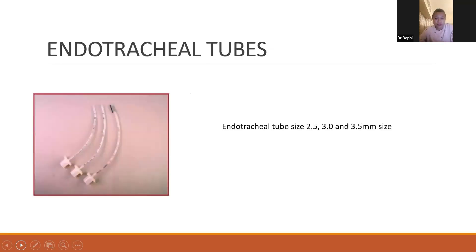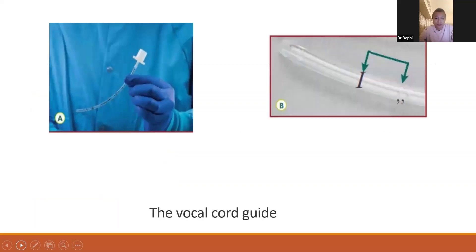These are pictures of the endotracheal tube. The sizes 2.5, 3, and 3.5 mm basically denote the internal diameter of the endotracheal tube. This is the vocal cord guide — a rough approximation for insertion depth. The tube should be inserted so that the vocal cord lies between the two lines, that is the black line and the two white lines.